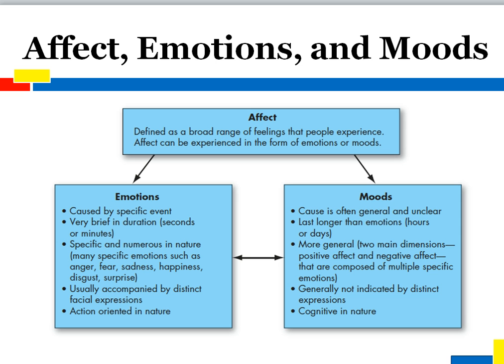Let's look at affect, emotion, and mood. Affect describes a broad range of feelings that people experience, and affect can be experienced in the form of emotions and moods. Affect is basically the initial feelings that get expressed as your emotion or your mood — it's a general term that covers the broad range of feelings people experience, including emotions and moods.